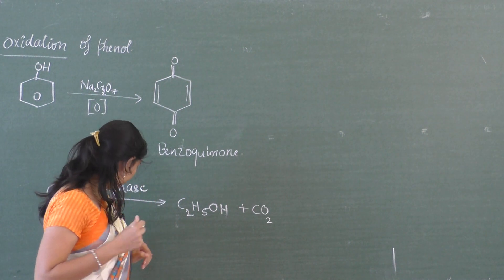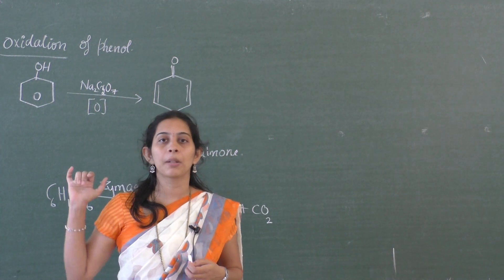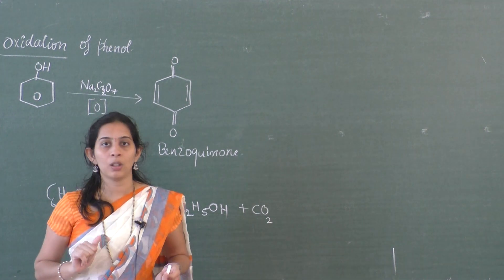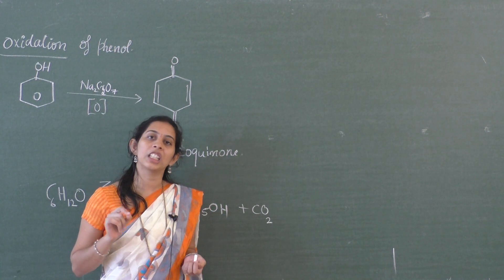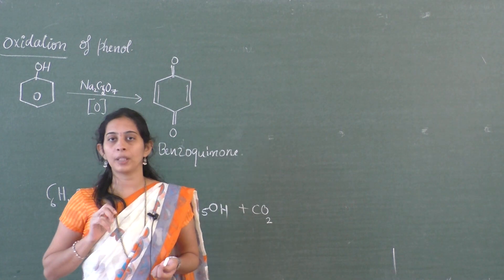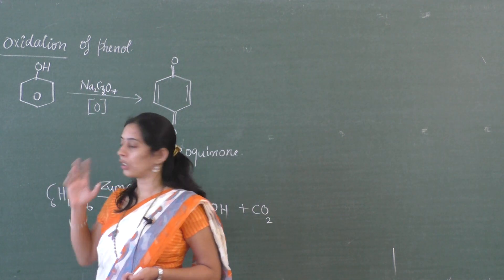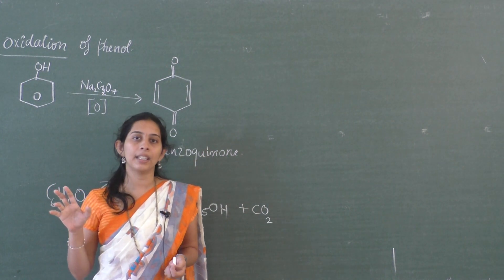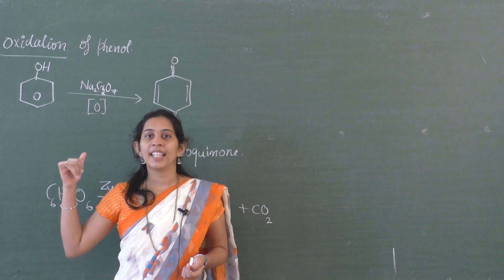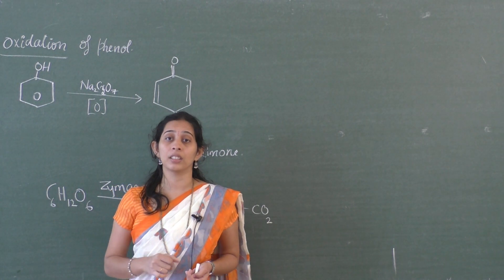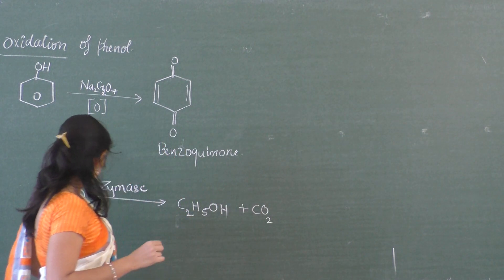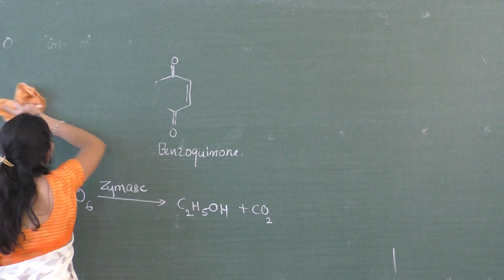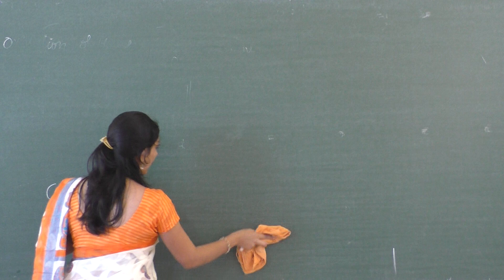Next we will move on to the last topic remaining in Alcohols, Phenols, and Ethers — that is ether. We discussed alcohol, where a hydroxyl group is attached to an alkyl group. Phenols are those where hydroxyl group is attached to an aromatic ring. Now, in ether we have to study the characteristics of ether, just as we did for alcohol and phenol.